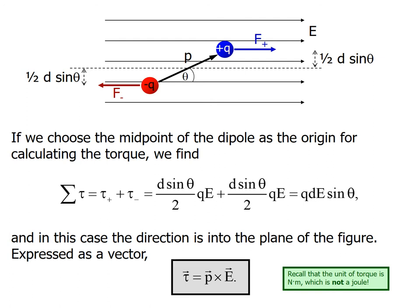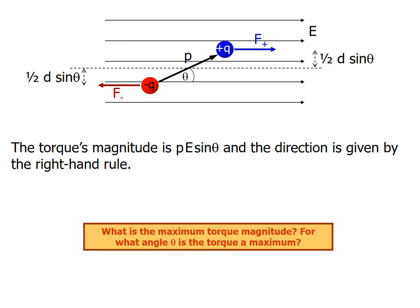The total torque is torque positive plus torque negative. Torque from plus Q plus torque from minus Q equals (d/2) sin theta QE plus (d/2) sin theta QE, which equals d sin theta QE, which equals QdE sin theta. This is the dipole moment times E, so we get P vector cross E vector. The total magnitude is PE sin theta and the direction is given by the right-hand rule.